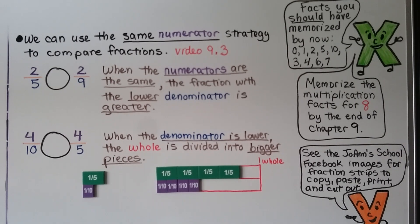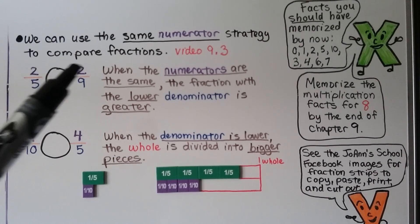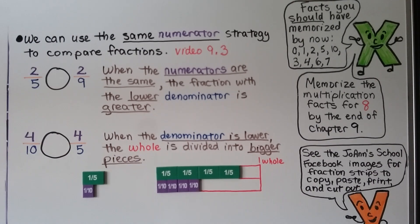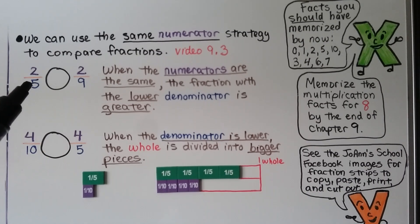We can use the same numerator strategy to compare fractions — we learned that in video 9.3, the one right before this one. We want to compare two-fifths and two-ninths. When the numerators are the same — they both have a two for a numerator — the fraction with the lower denominator is greater. This has a five, this has a nine, five is lower, so this is the greater fraction. We know two-fifths is greater than two-ninths.